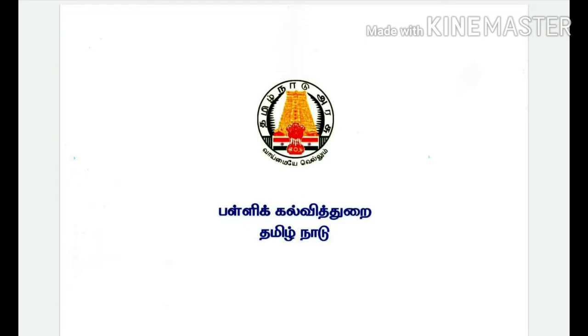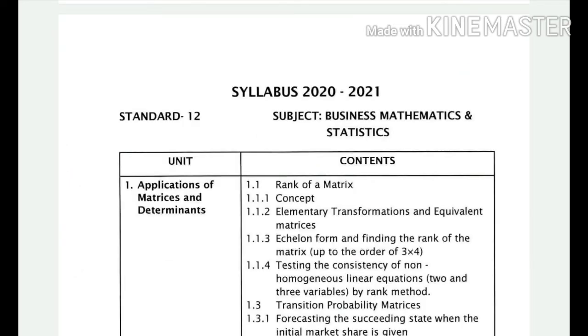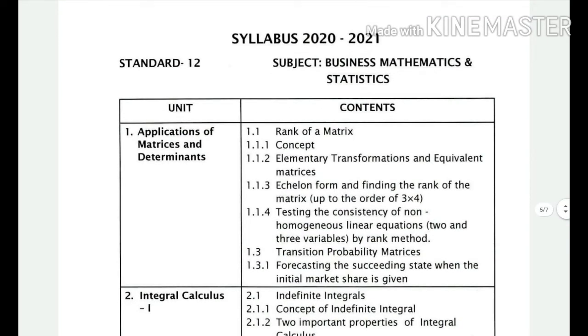In Business Mathematics, the first chapter is Applications of Matrices and Determinants. Topics like rank of a matrix and transition probability matrices are included, but Kramer's rule based problems have been omitted.